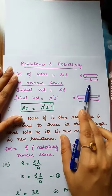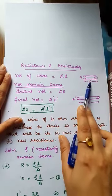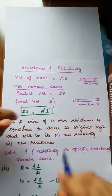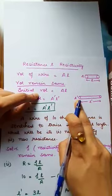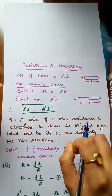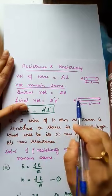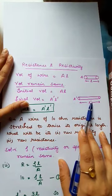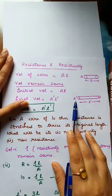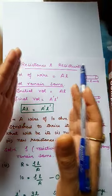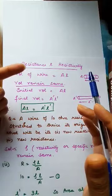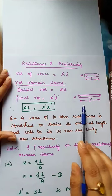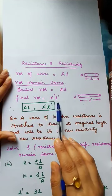Now we have to consider the volume of the wire. When we stretch the wire, the length will increase. But when the length increases, the area of cross section will decrease. The initial volume is A into L, and when you stretch it, the final volume is A-dash into L-dash.